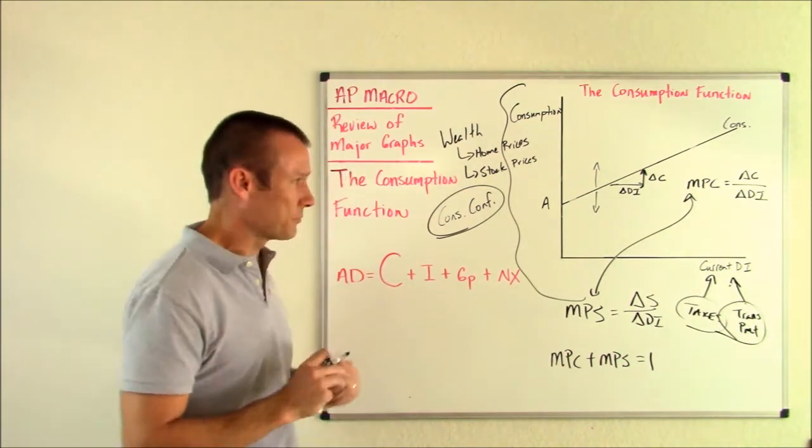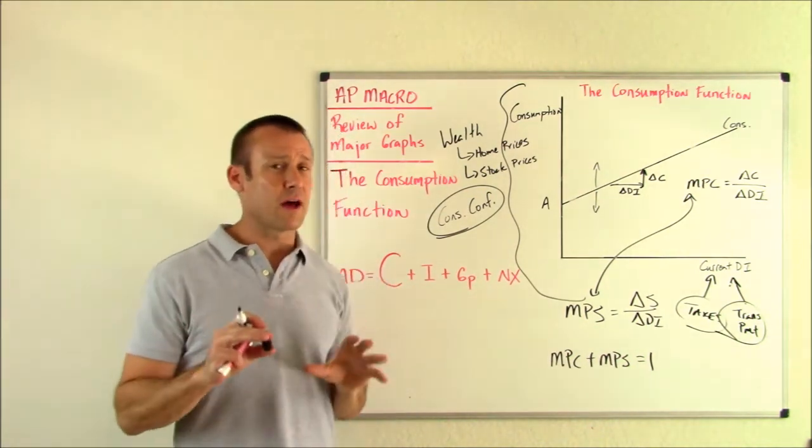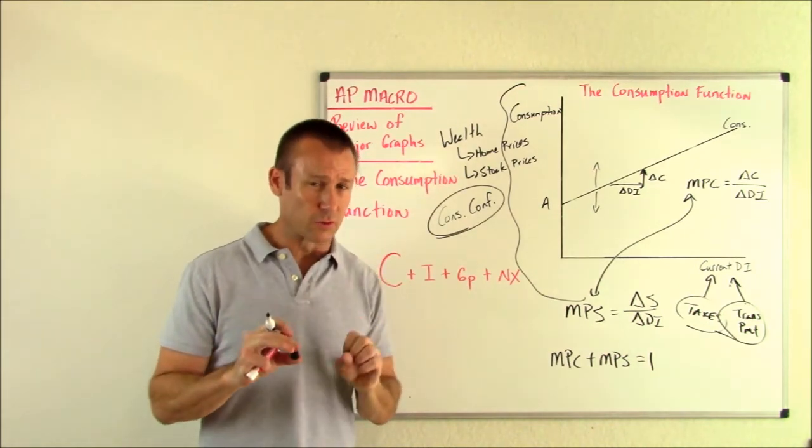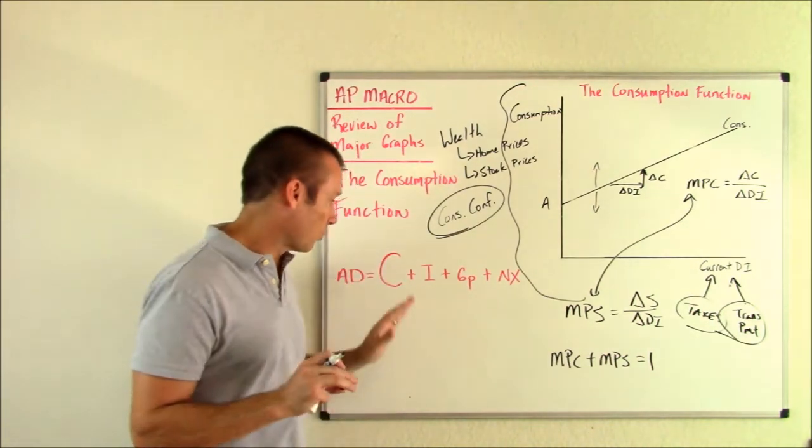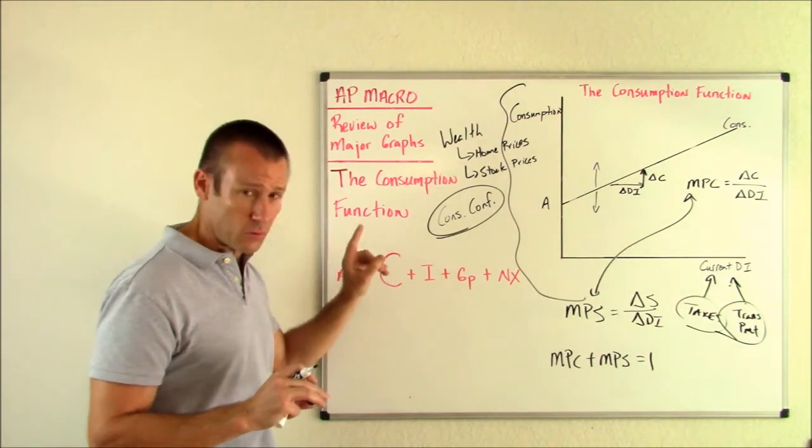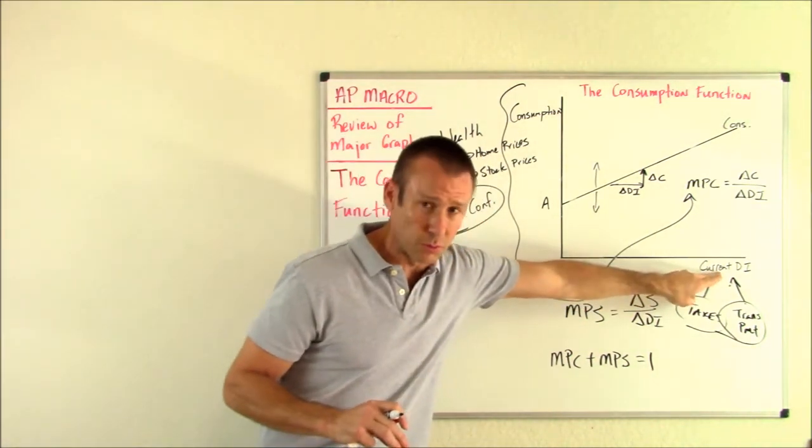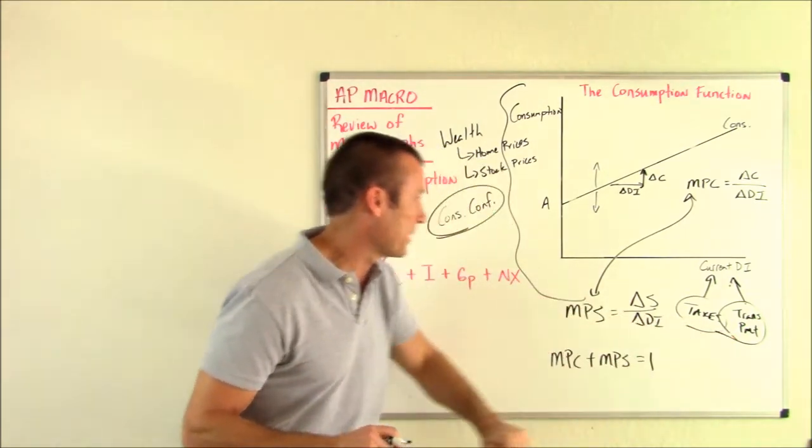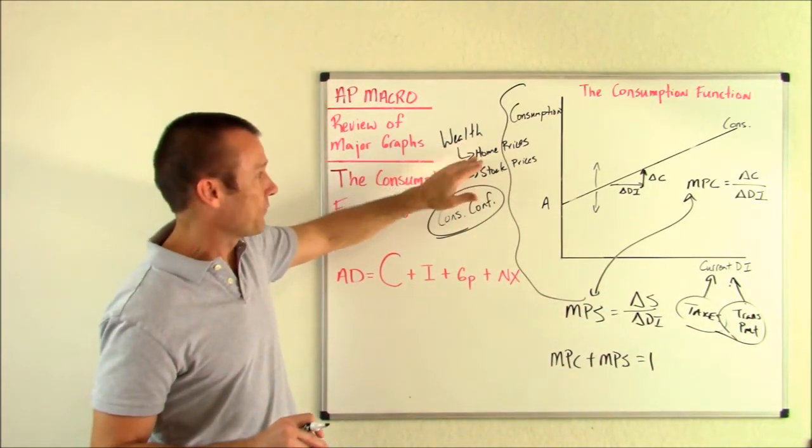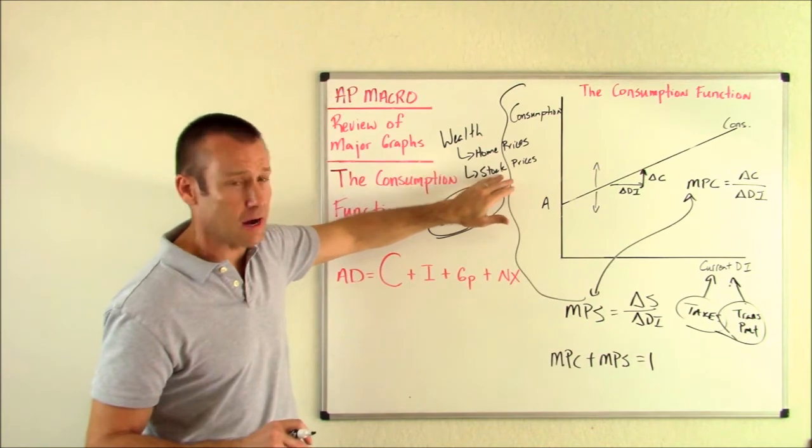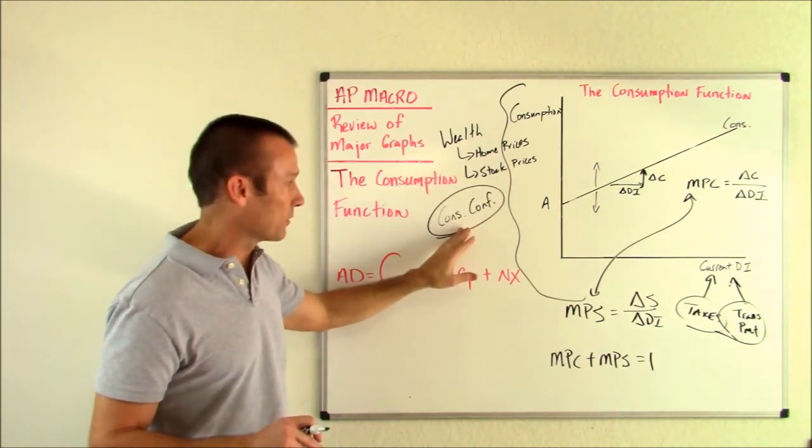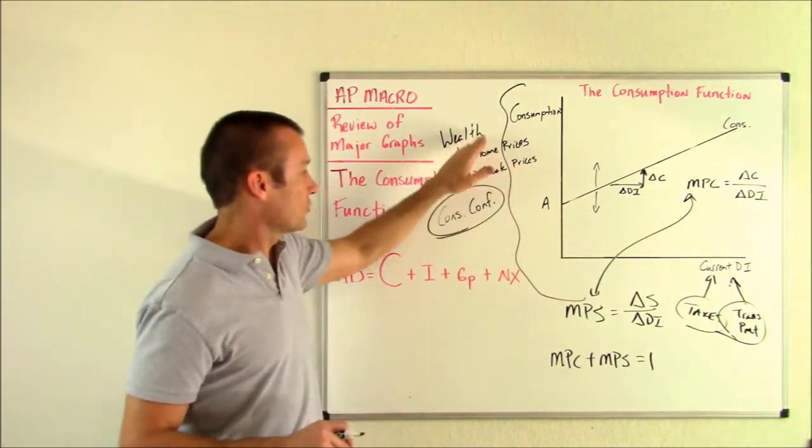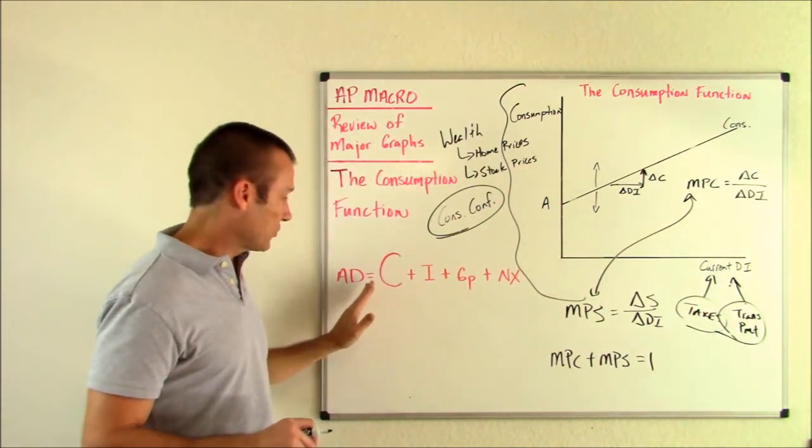So again, this is the consumption function. You're probably never going to have to actually graph it. But there's going to be all kinds of questions related to it. One of the big things is, what changes consumption? What did we go through? Current disposable income? Absolutely. Taxes? Absolutely. Transfer payments. Wealth. Wealth effects. Things like home prices and stock prices. And then finally, consumer confidence. And guys, any of those things that change consumption change AD.